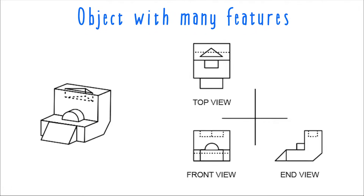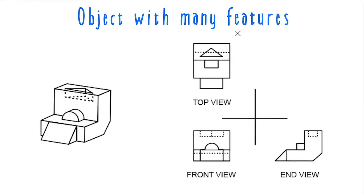We can also notice that a triangular cutout like this one will appear rectangular from certain views — in this case, the front view and the end view. In the front view, you can see that the triangular cutout accounts for three hidden edges corresponding to the three points of the triangle. And lastly, notice that there are two horizontal hidden edges that run across the object from side to side — one depicted as a dotted line in the top view and one depicted by a dotted line in the front view.